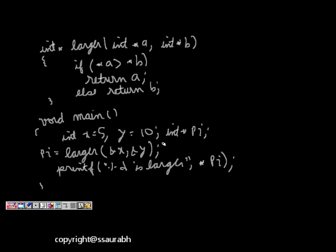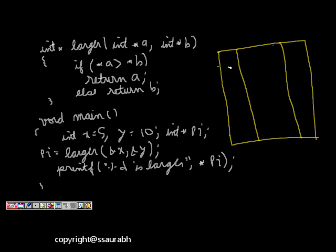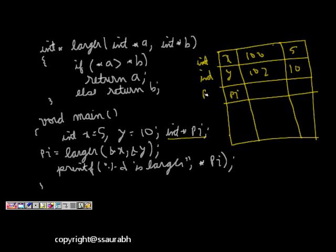So now we should see what is happening in this code. So again drawing the memory map. We have x and y. So let them be at 100 and 102, memory location 5 and 10 are the values. So now I call, and there is the pointer pi. So pi is pointer, these are int, this is int, this is pointer to int. Let this be at location 150.